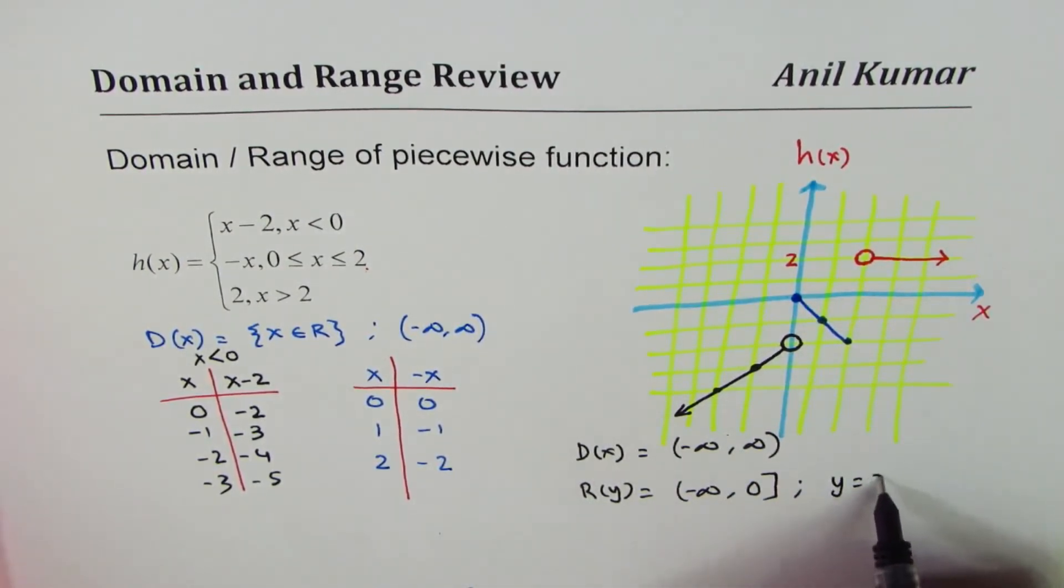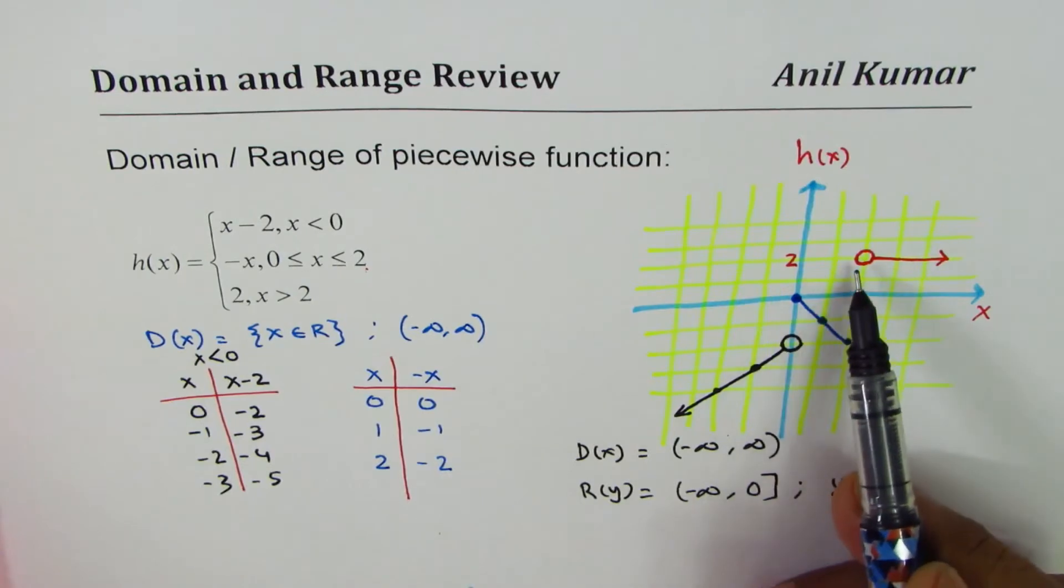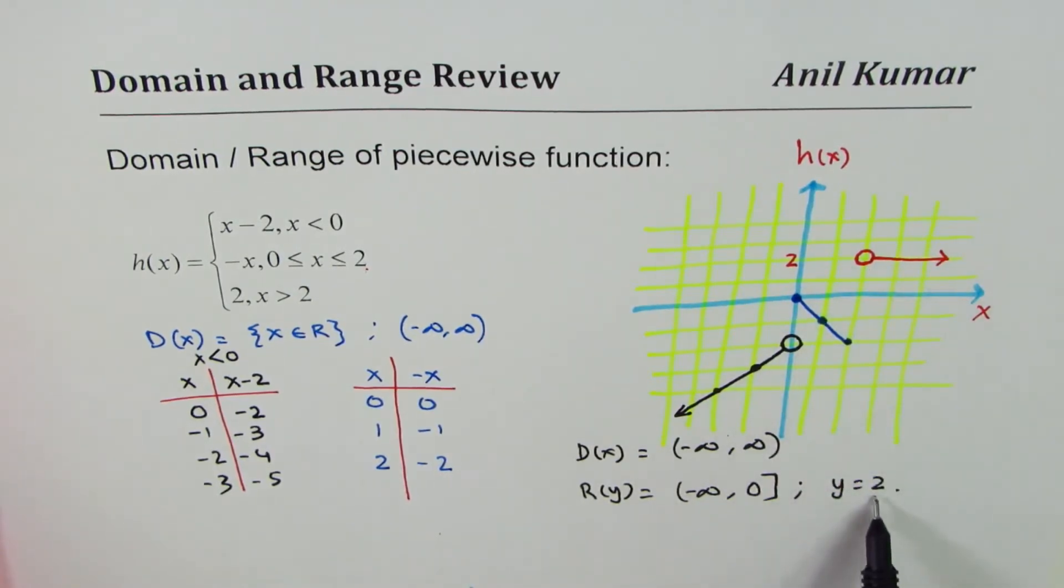And the range is from minus infinity to, this is connected to 0, so it is from minus infinity to 0, 0 is included, and y equals to 2. Do you see that? So the range is from minus infinity to 0 and the value 2 itself. You can always write domain and range in different nomenclatures, select the one which you are familiar with.